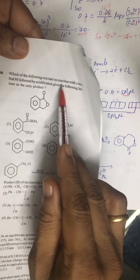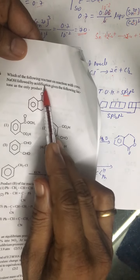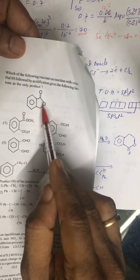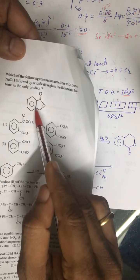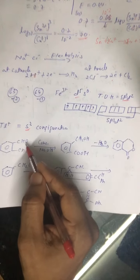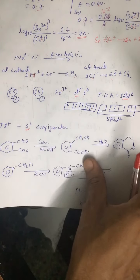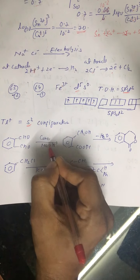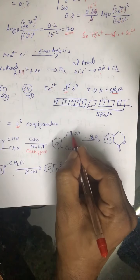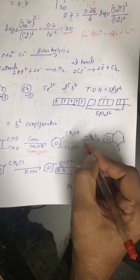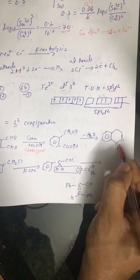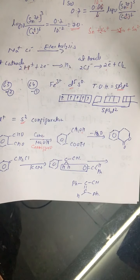Question number 66: a reactant treated with concentrated NaOH followed by acidification gives a lactone (cyclic ester) as the only product. The correct answer is the third option — an aldehyde with no alpha hydrogen. When treated with concentrated NaOH, the Cannizzaro reaction occurs: one CHO group is reduced to an alcohol and the other is oxidized to a carboxylic acid. Water is then removed to form the lactone product.